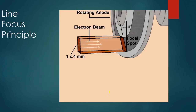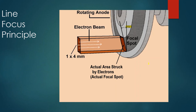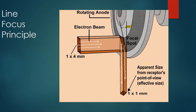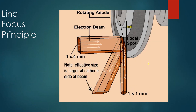The line focus principle: when the electron beam travels from cathode to anode, it is focused into a point — but it actually has an area, in this case approximately one by four millimeters. Due to the anode's bevel — in this case 15 degrees — the angle changes what is the actual area the electrons strike compared to the area apparent from the point of view of the receptor. The apparent size of the focal spot changes depending on whether we view it from the cathode side or anode side of the table, but the line focus principle states that the effective or apparent focal spot will always project smaller than the actual focal spot.